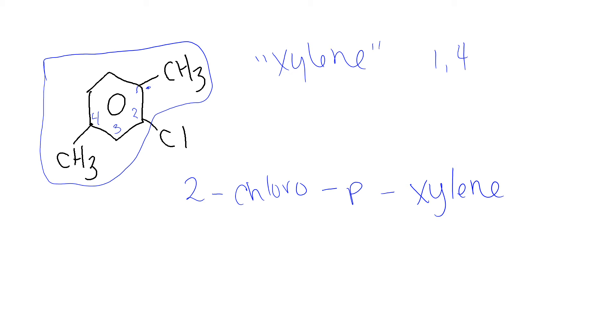If we were not using xylene as our root, as our common name, we would still call this 2-chloro. We would still mention that we have two methyl groups in the 1,4 pattern or the para pattern. But this time, we would use benzene as our root. And we would actually mention each of these methyl groups by themselves. So you would have p-dimethylbenzene.